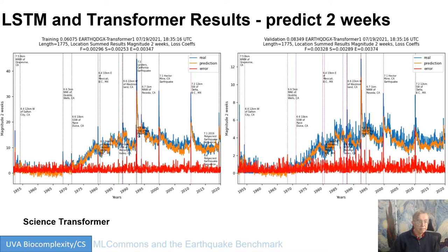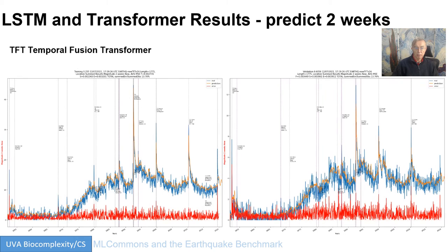These results are relatively similar between the different models. Here we have the Science Transformer, which actually runs on a DGX because of the large memory needed, and it has very similar full results — with the full being better for training. For validation, 328 versus 296 and 327 for the LSTM — pretty similar. Now we have the Temporal Fusion Transformer, and it's significantly better than the previous fits, especially for training. However, for validation it gives somewhat worse answers than the LSTM and Science Transformer — the TFT overfits for training but gives fair validation answers.